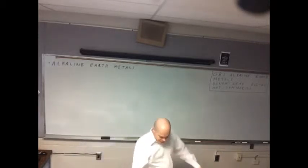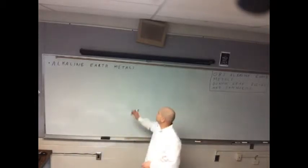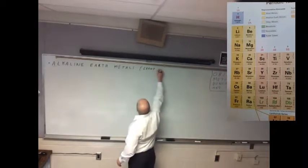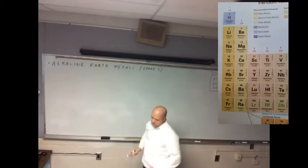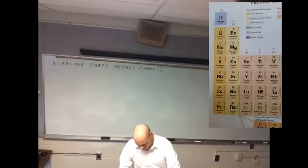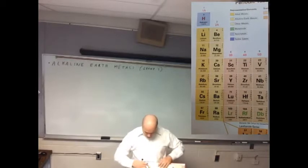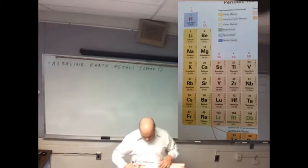Alright, alkaline earth metals, also known as group two. So on your book periodic table it's these medium yellow colored ones, group two.